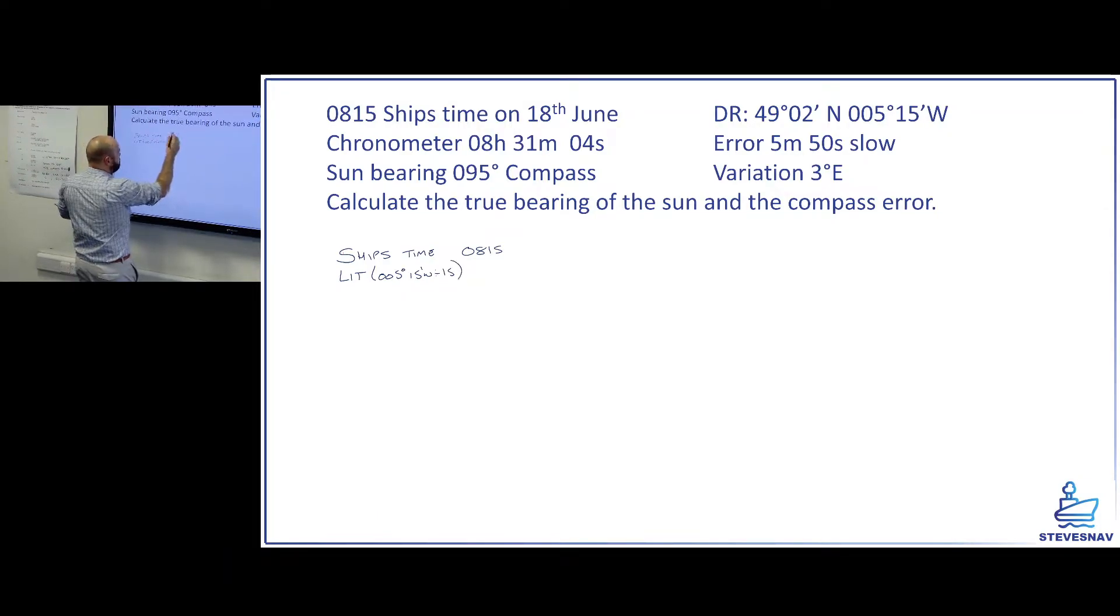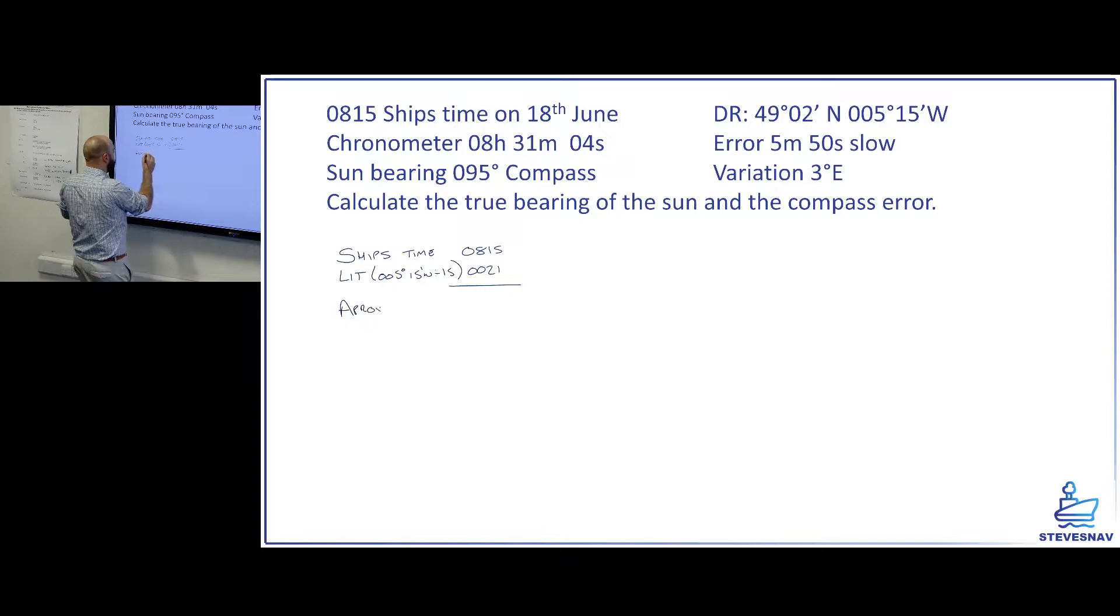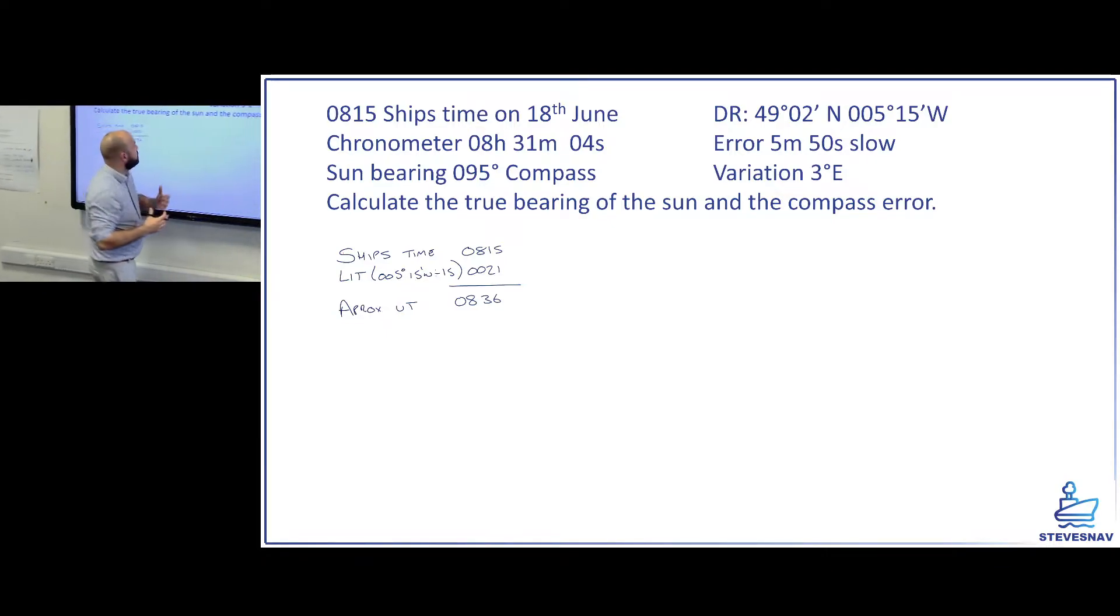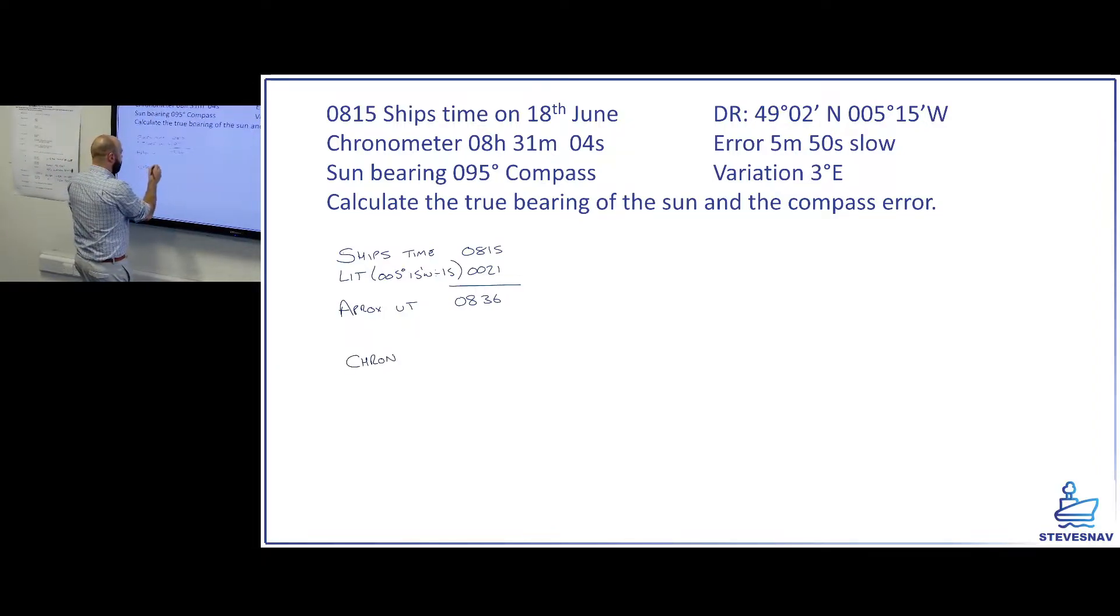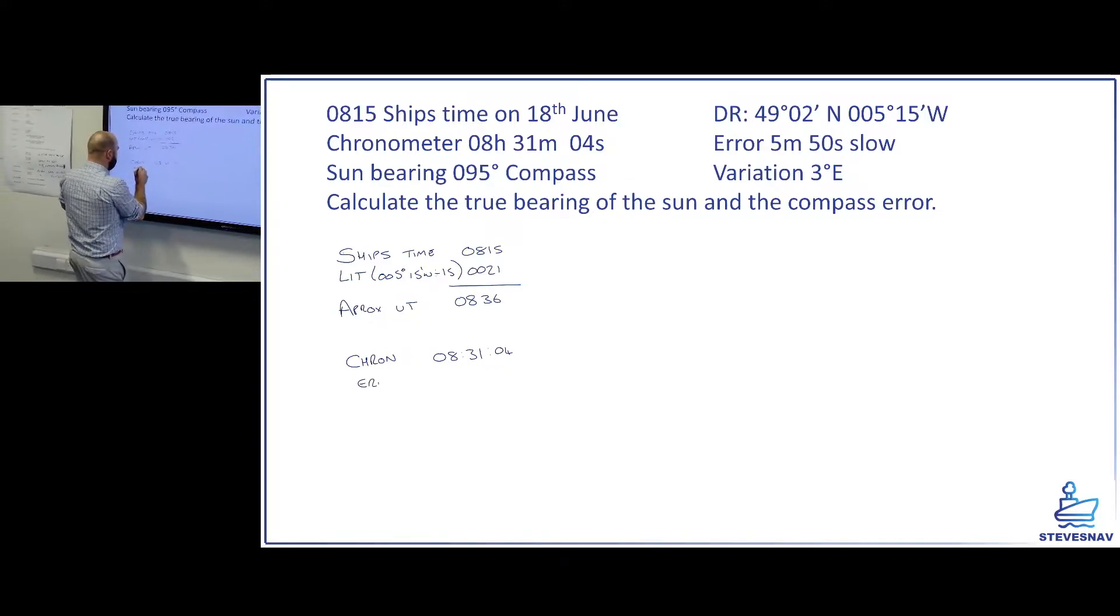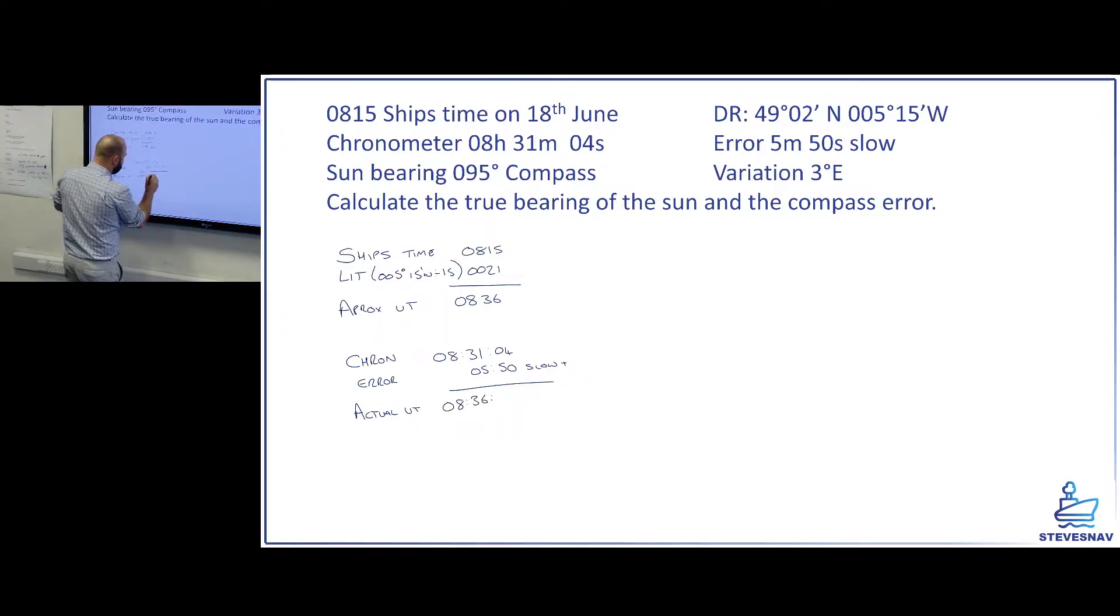We're going to say right where in the world were we? Well at 08:15 we were actually at 5 degrees 15 minutes west. So what we're going to do is do our longitude in time of 5 degrees 15 minutes west divided by 15 and that's going to give us 21 minutes. That's going to be 08:36 approximate. Now we need an actual UT. We're only using that to find out if it's going to be AM or PM on the chronometer. So was that 08:31 or 20:31? Well we know now it was 08:30 roughly UT. So it's going to be 08:30 actual. So the chronometer should have been reading 08:31:04 and the error was 5 minutes 50 seconds slow. So we're going to have to add that on.